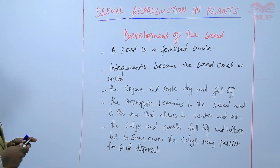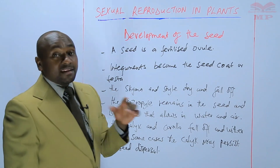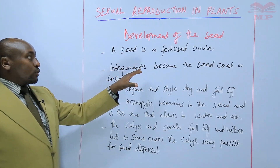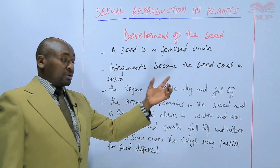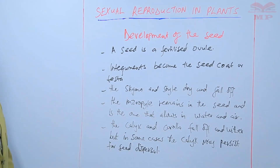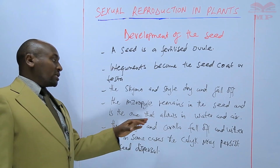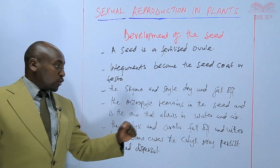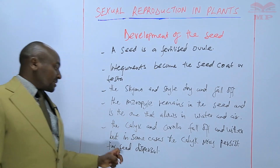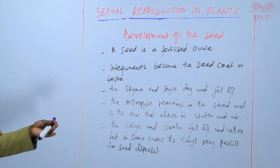So basically, that is how the seed develops. A seed is a fertilized ovule — whatever was the ovule while in the flower, after fertilization, it becomes the seed. The integuments become the seed coat or testa. The stigma and style dry and fall off. The micropyle remains in the seed and allows in water and air. The calyx and corolla fall off and wither, but in some cases the calyx may persist for seed dispersal.